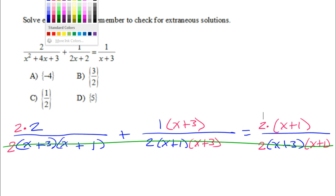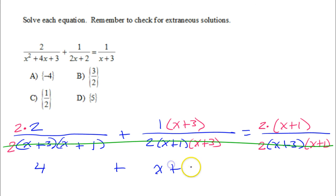So if I ignore the denominators, 2 times 2 is 4. So I have 4 plus x plus 3 is equal to, and I'm going to do the distributive property here. So that will be 2x plus 2. Ignoring the denominators, this is what I have.